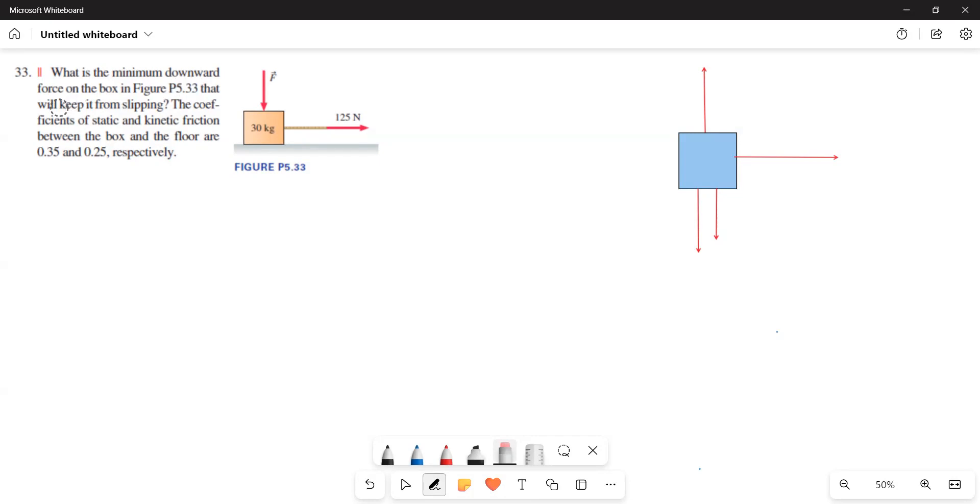What is the minimum downward force on the box in figure that will keep it from slipping? The coefficients of static and kinetic friction between the box and the floor are 0.35 and 0.25 respectively.